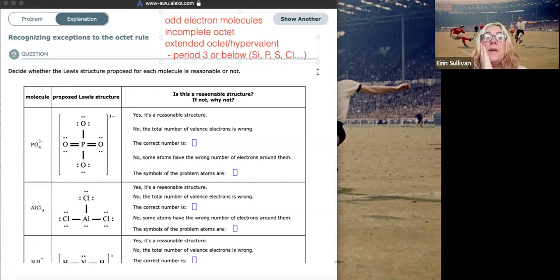Another time that you see extended octets is when you're in period three or below, and it's to minimize formal charges. Sulfur likes to do this quite a bit. So even though it's only forming four bonds, sometimes if you check the formal charges, they're not minimized. And then you can convert lone pairs to bonding pairs and expand the octet as sulfur and it will lower the formal charge. Anyway, so let's check these guys.